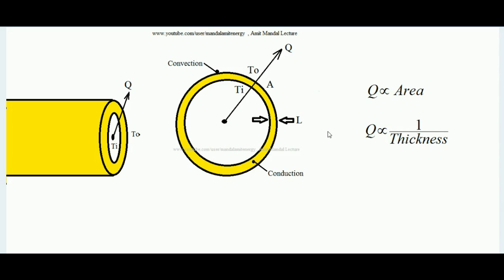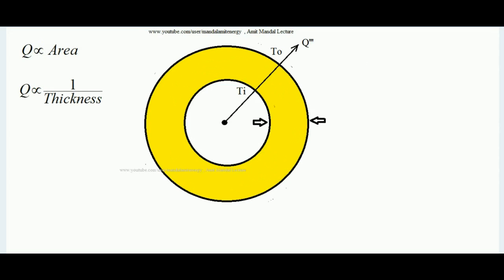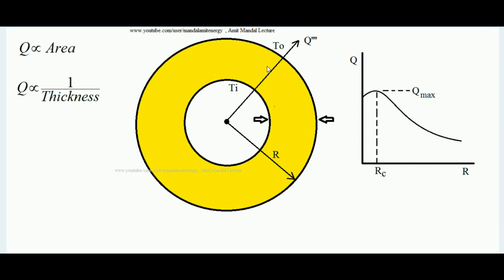Now a key question arises: since this is a cylindrical surface, the area of the peripheral surface is given by 2πrl, where r is the radius of the cylinder. For the outer peripheral area, if the length of the cylinder is constant, then greater the thickness of insulation, greater the radius, and therefore greater the surface area. So as we keep increasing the radius of insulation, two things happen simultaneously: the thickness of insulation increases, and the outer peripheral surface area also increases.